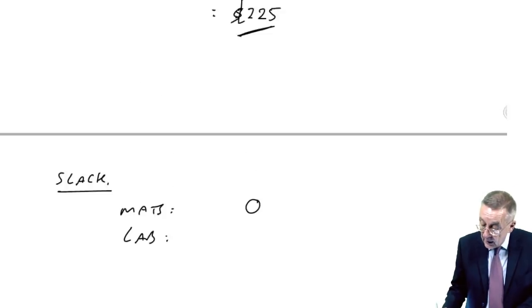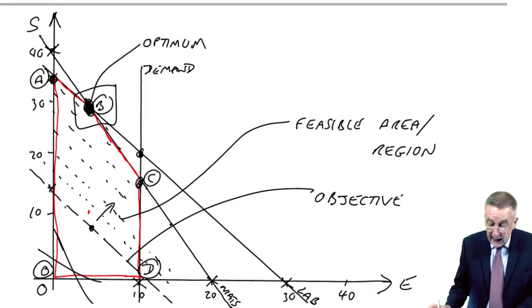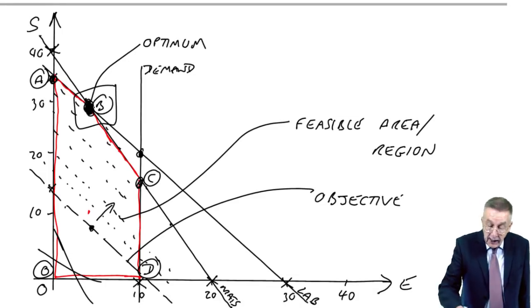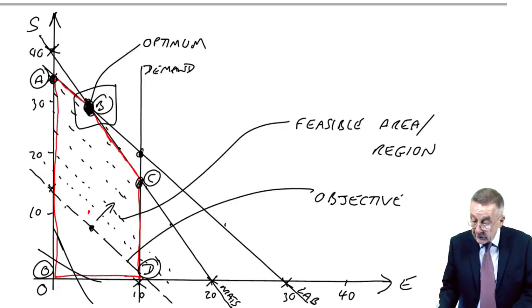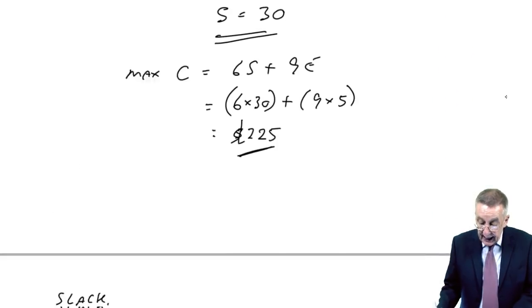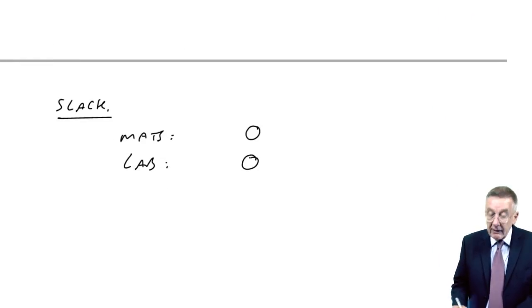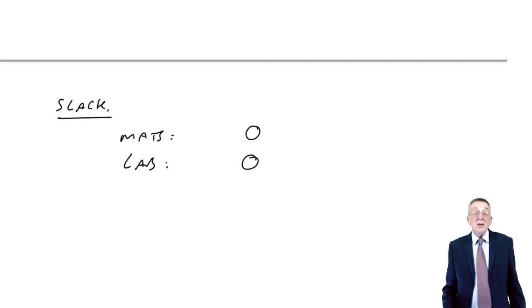What about labour? There were 80 available. Are we using all 80? Yes, we are. We're on the labour line. And if we're on the line, we are using the full 80. So again, labour, there is no spare, there's no slack.